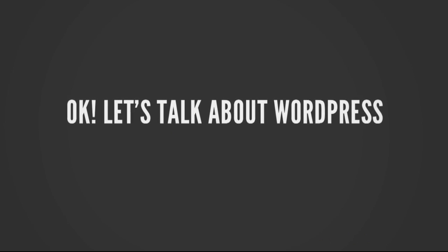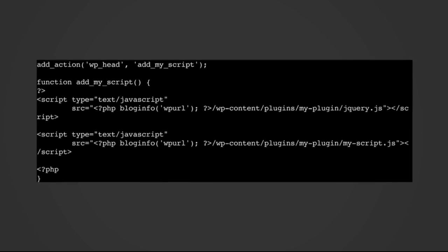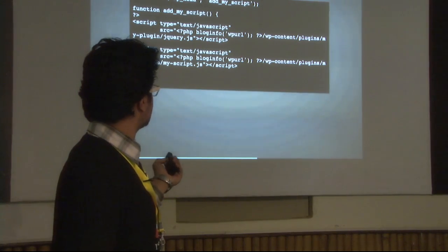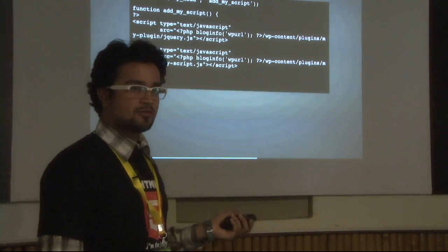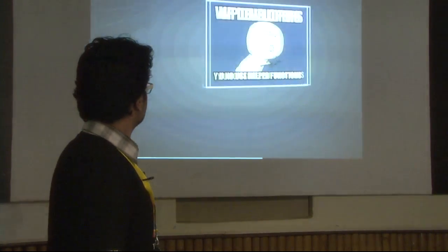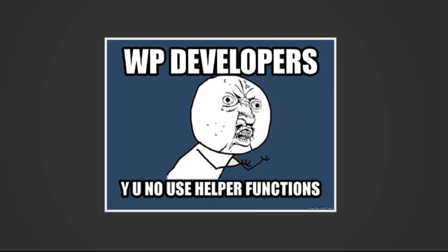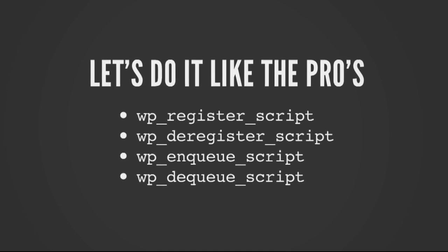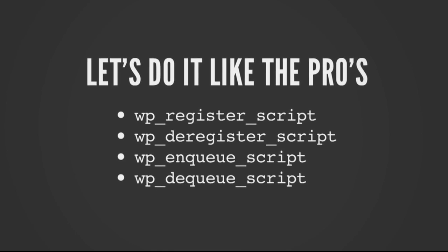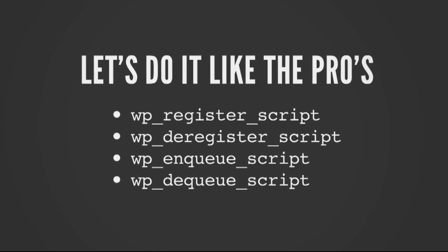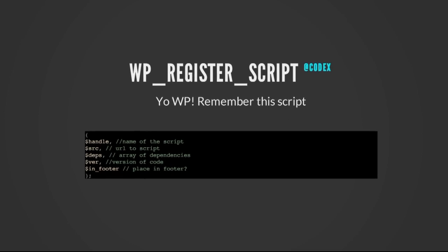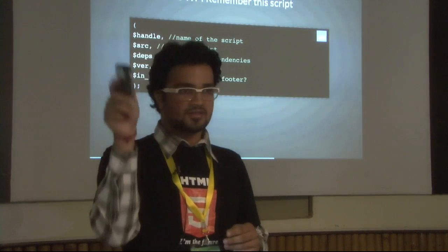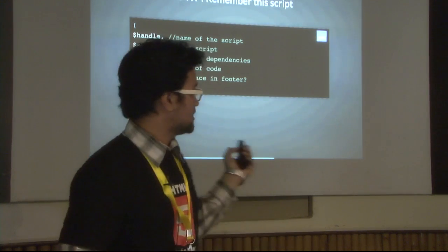Now let's talk about WordPress. How many of us have inserted script tags via echo — just echoing them? Please use helper functions. WordPress gives us a number of helper functions: `wp_register_script`, `wp_deregister_script`, `wp_enqueue_script`, `wp_dequeue_script`. The register script is like telling WordPress: remember this script for me, I will require it later.